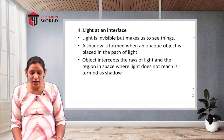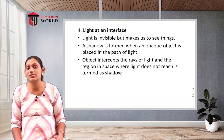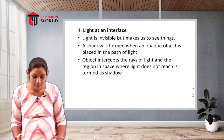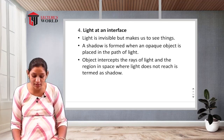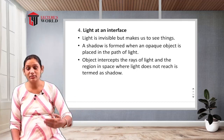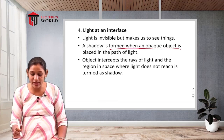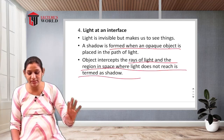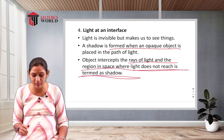Light is invisible itself but makes us able to see things. Light makes objects visible to us. A shadow is formed when an opaque object is placed in the path of light. The object intercepts the rays of light, and the region where light does not reach is termed a shadow.